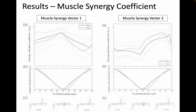Looking at muscle synergy coefficients — coefficients describe the relative weighting and contribution of each muscle synergy. We're looking at both the slow and fast conditions. For the coefficient for muscle synergy one, you can see the phase of the bench press: starting at the top, coming back down, and pressing back up. Both slow and fast conditions had the same kind of peak right in the middle, about halfway through the bench press.